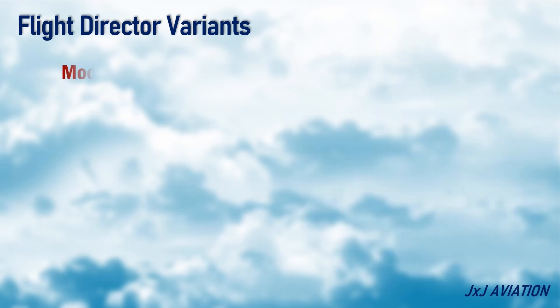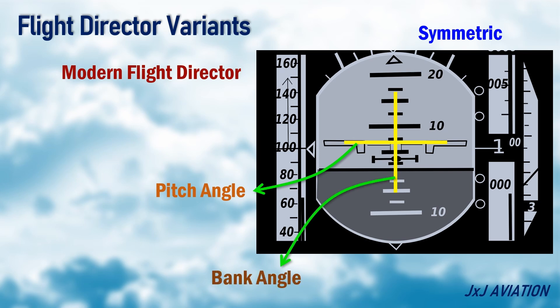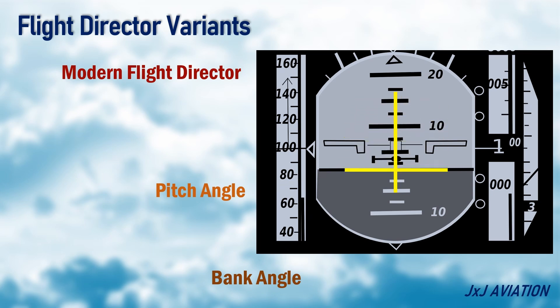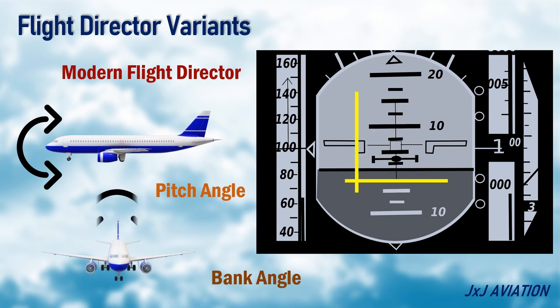Modern flight director variants have crossbars. When an aircraft has to fly in level flight, the crossbars form a symmetric plus shape. The horizontal bar represents the pitch angle that is required, and the vertical bar denotes the bank angle that is required. So if the horizontal bar moves up or down, it means a pitch up or pitch down is required. If the vertical bar moves right or left, it means the aircraft has to bank or turn in that direction.